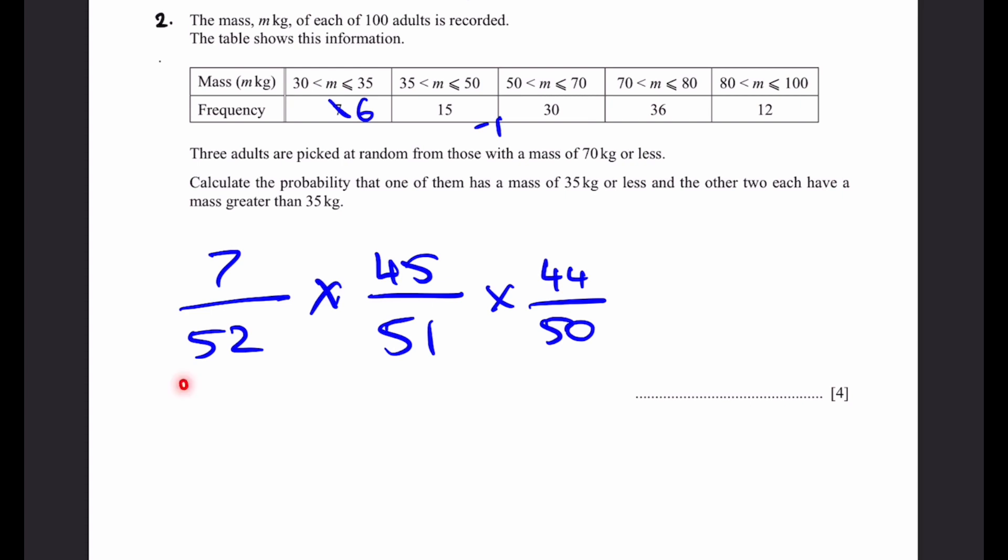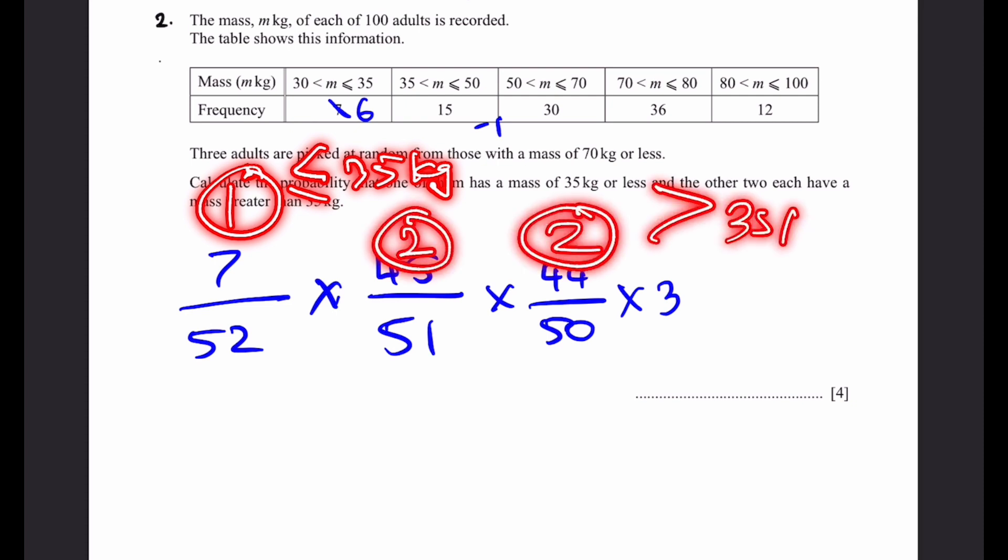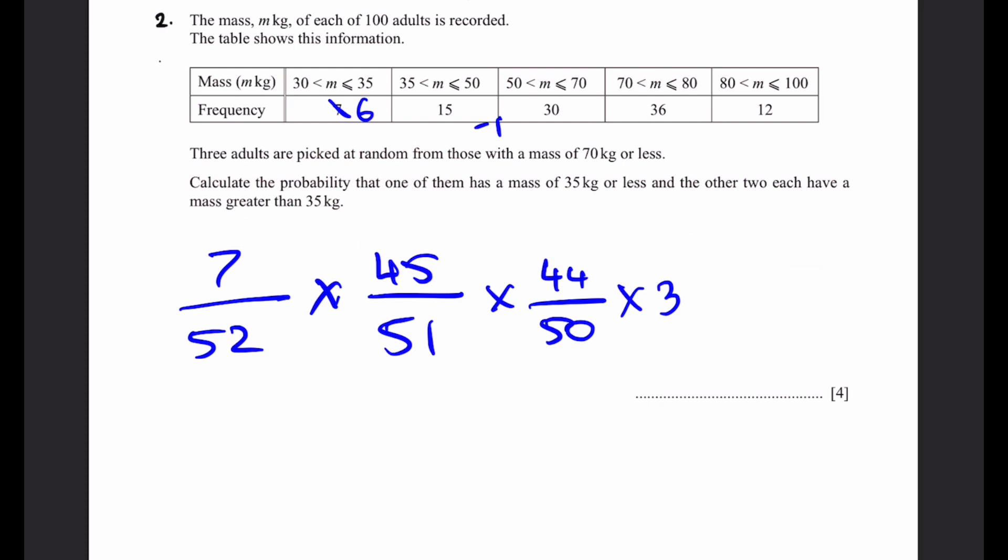And we multiply these three by 3. Well, why are we multiplying by 3? That's because we have one type of person who is less than or equal to 35 kgs, and the other two are the second type of person who are greater than 35 kgs. So, we can arrange this in three different orders.